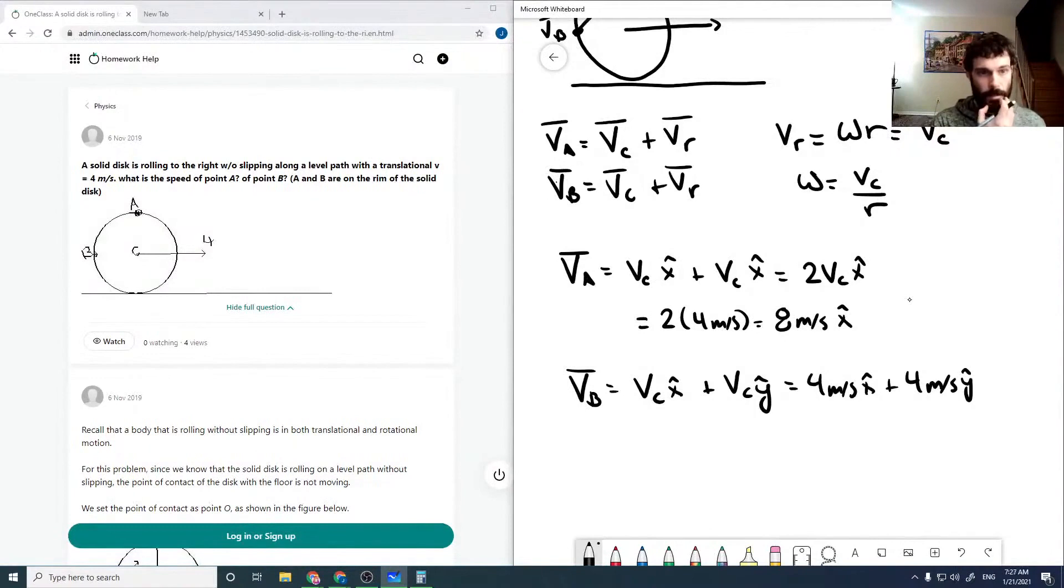And it asks what is the speed. So our speed is our magnitude. So it'll be root 4 squared plus 4 squared, which is equal to the root of 32, which is 5.66 meters per second.